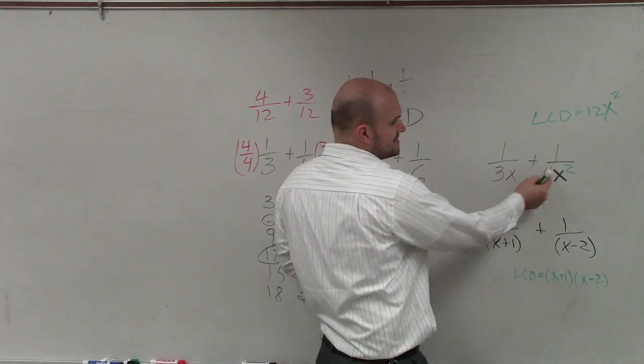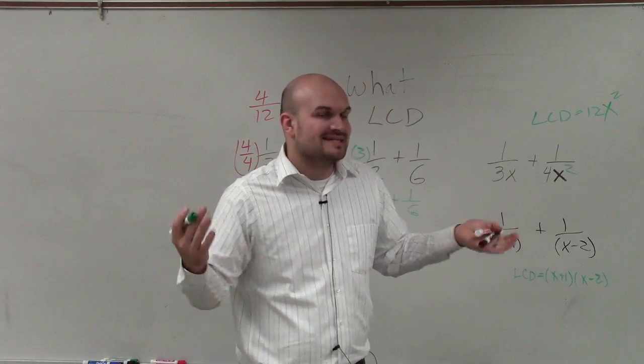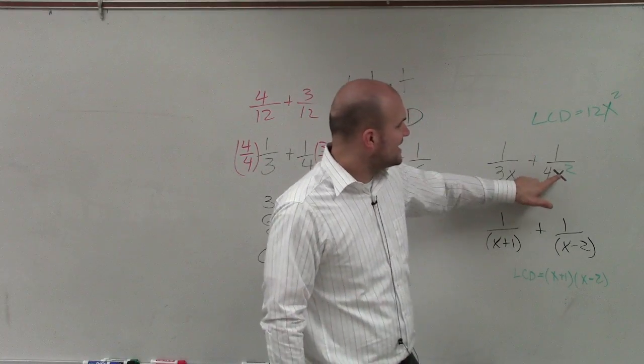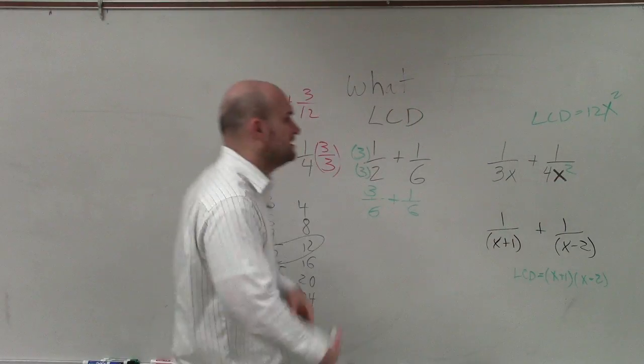And you can do it also as well like here, but again be careful: 3x times 4x squared would be 12x cubed. That's not the least common multiple. You can still use it, but notice that x squared would be the smallest multiple. So it is a little bit different when we're dealing with variables compared with numbers.